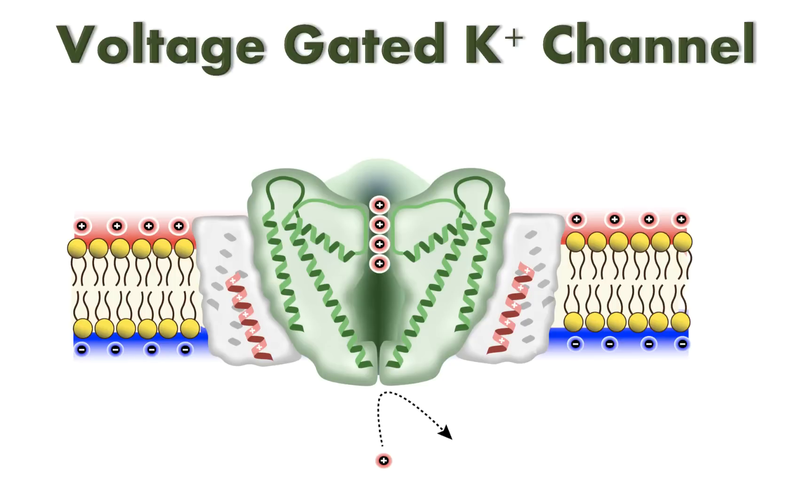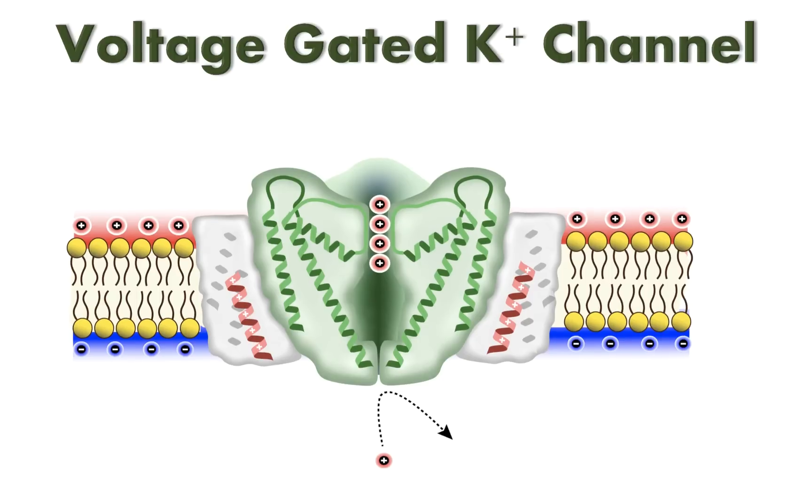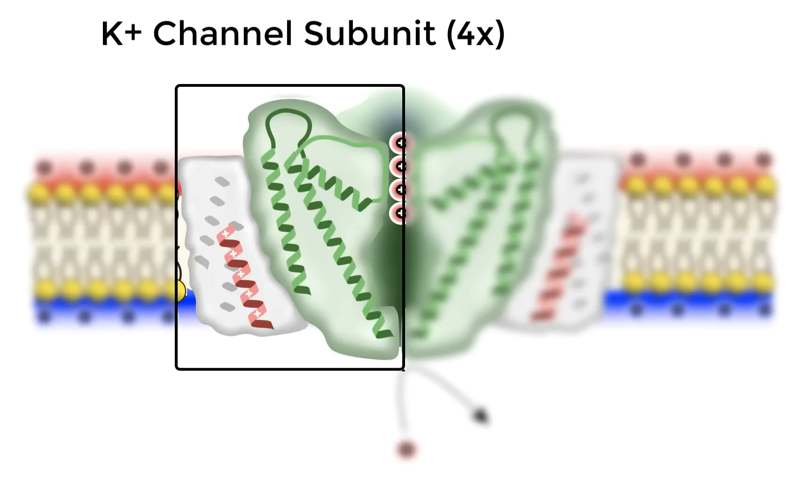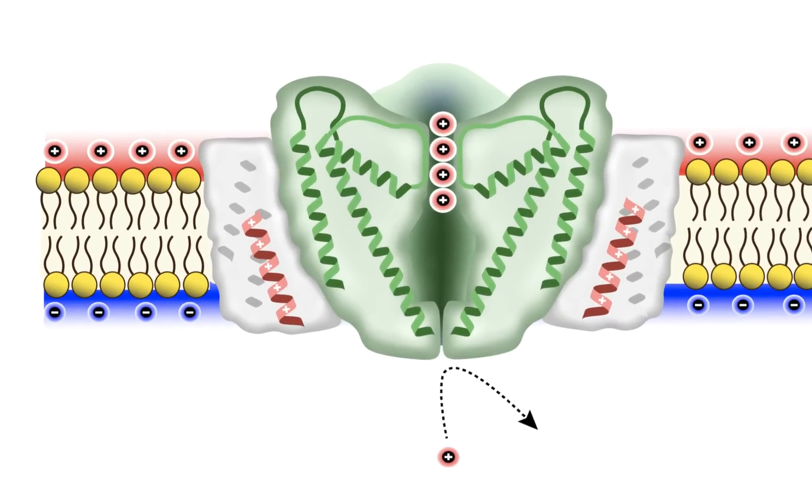Voltage-gated potassium channels share a number of structural similarities with the voltage-gated sodium channel counterparts I discussed earlier. Just to go over these quickly, voltage-gated potassium channels are comprised of four subunits, where each subunit has a pore-forming domain and the voltage sensor domain. For the pore-forming domain, a couple of important features is it has the selectivity filter, which helps impart a high degree of selectivity for potassium ion. It's also in the pore-forming domain where the voltage gate is located.